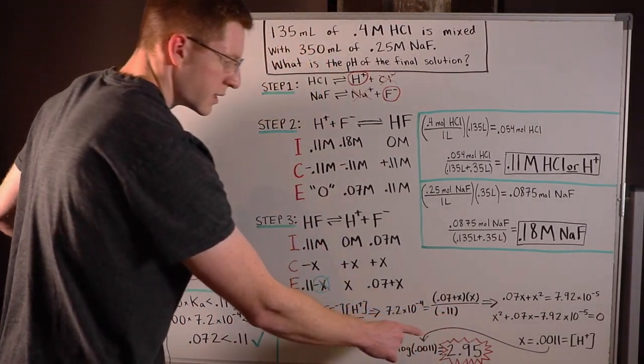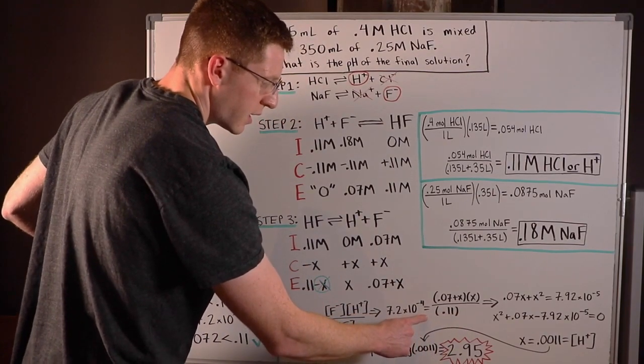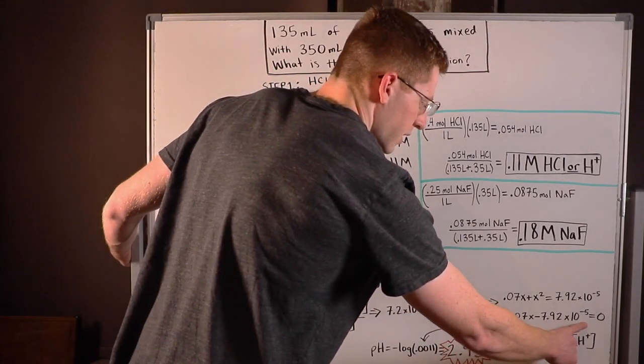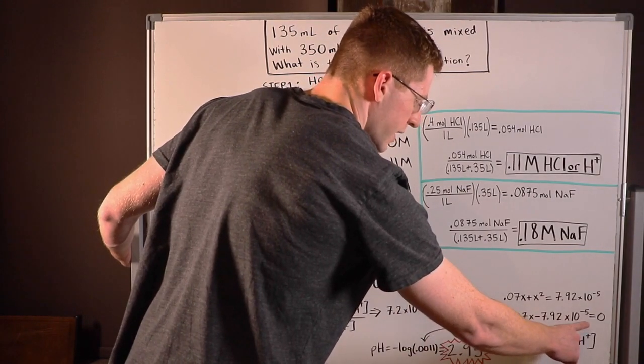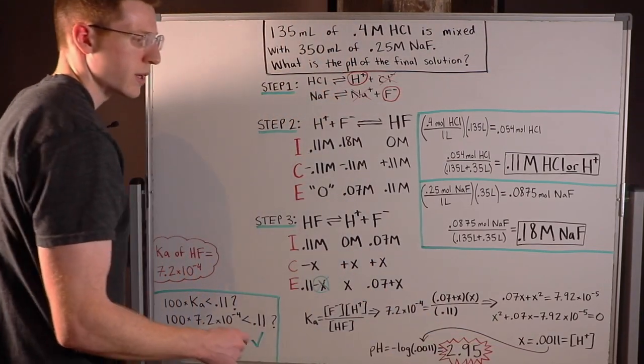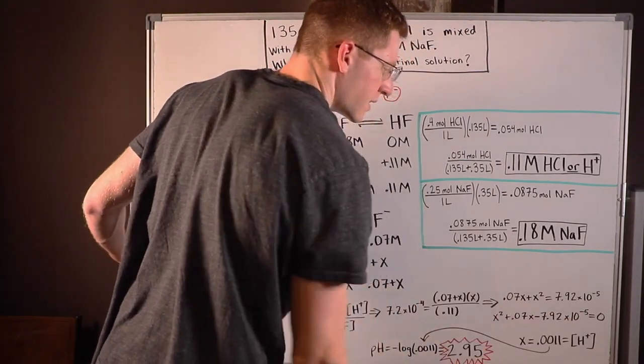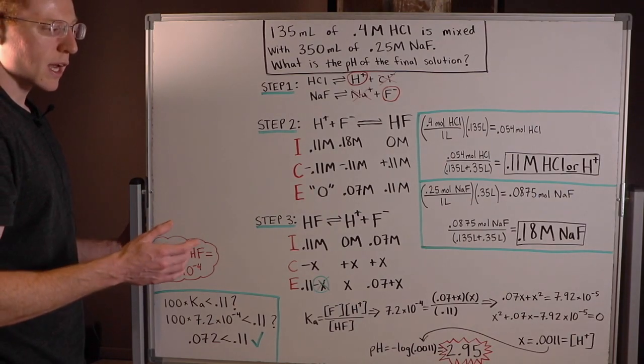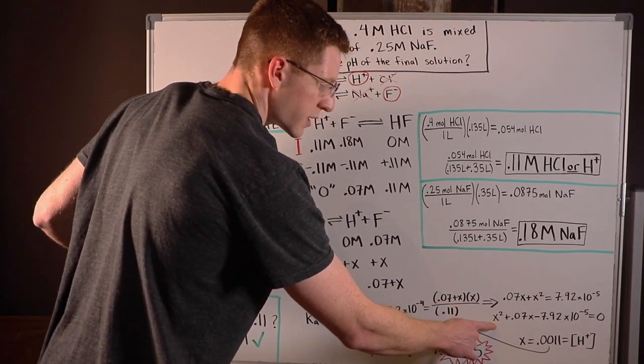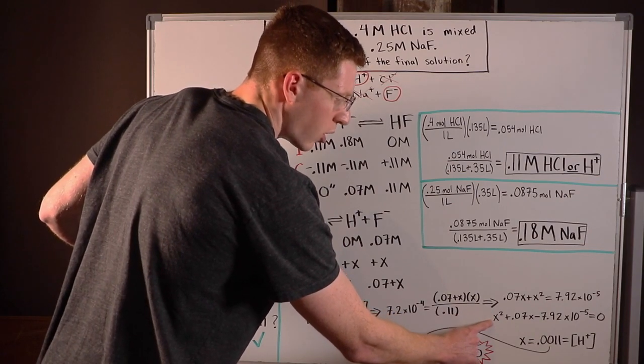So I went ahead and did some algebra to simplify this reaction to try to isolate X. And you can see I'm actually left with a quadratic equation here, X squared plus 0.07X minus 7.92 times 10 to the negative five equals zero.